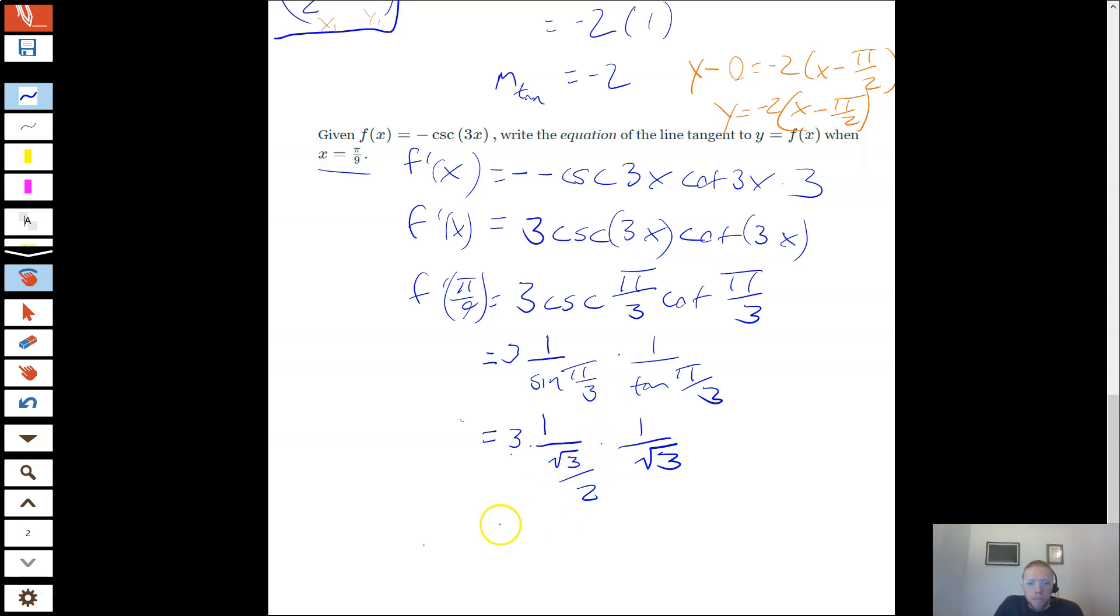And then I'll simplify this. So 3 we'll rewrite. We're going to flip this fraction because it's 1 over a fraction. 2 over √3. And then this is already just sort of a fraction by itself. So I'm going to leave that alone. And then I'm going to multiply straight across. So I'll do 3 times 2 times 1 is 3 on top. Just kidding. 3 times 2 is 6 on top. And then √3 times √3 on the bottom is just 3. So 6 over 3 is 2. So that's my slope. So I could say the slope of my tangent line is 2.